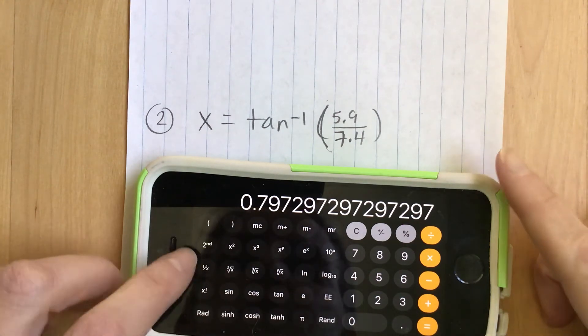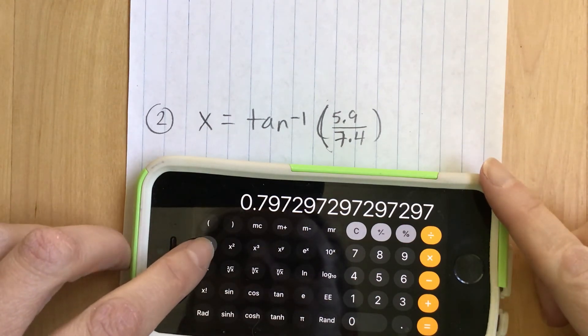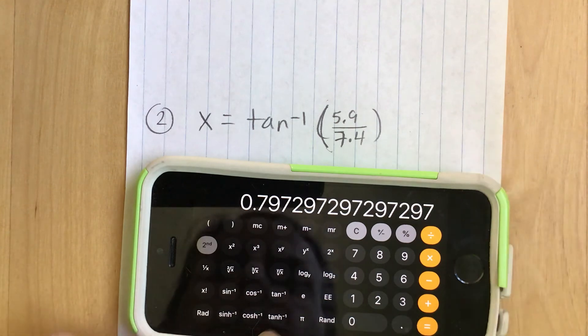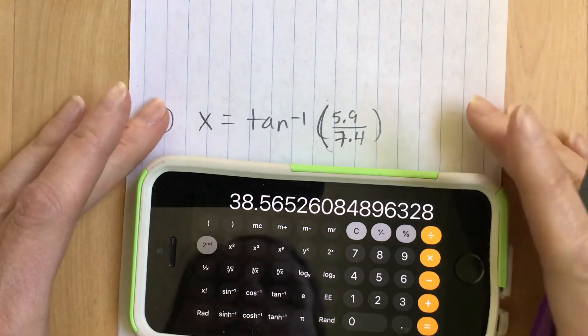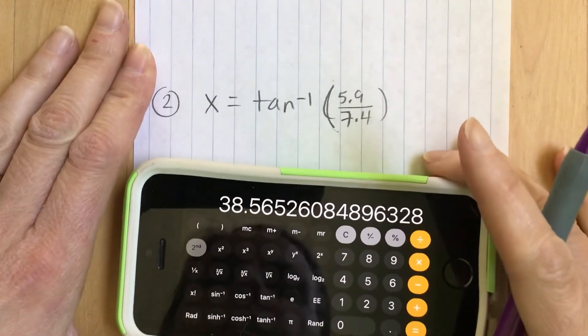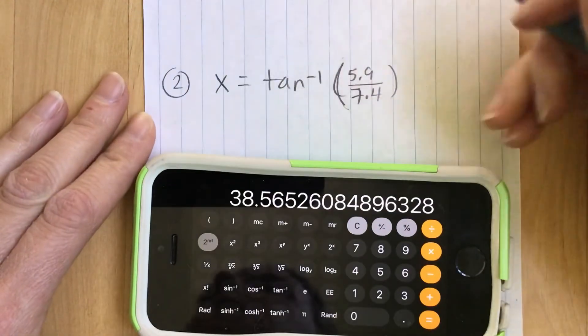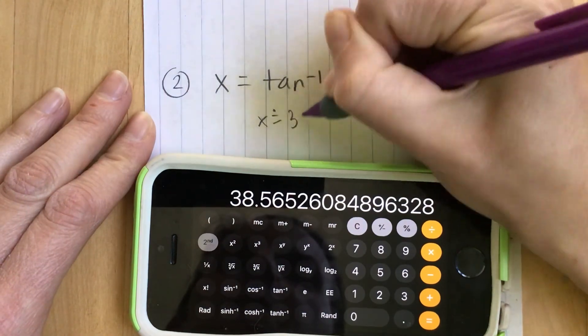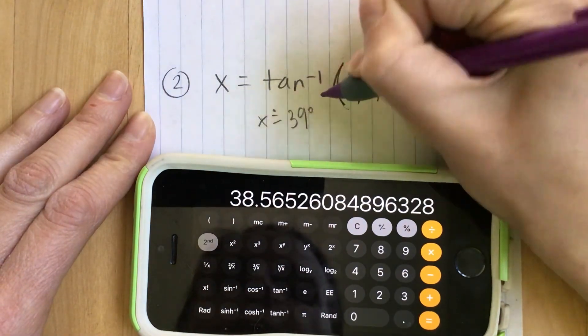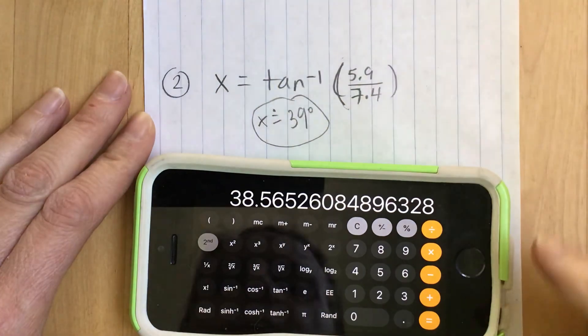Now we want to do second and see how now we have tan to the negative one and that's what we want. Inverse tan. So now we touch that. There we go. So it gives us 38.565 and so on and we're going to round this to a whole number. So this is going to give us approximately 39 and this would be degrees. So we'll put a degree sign right there.